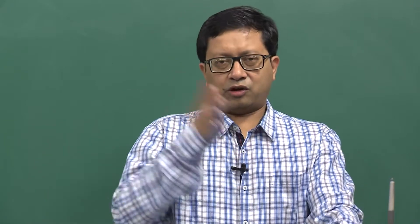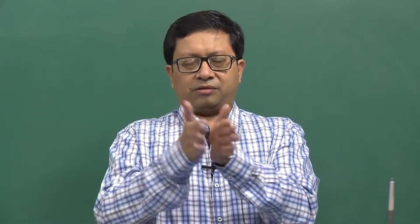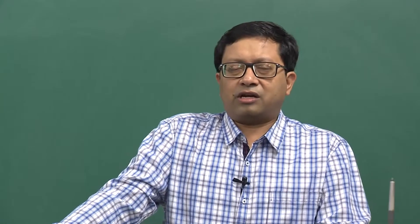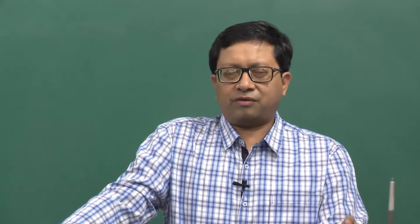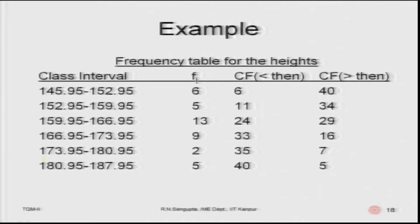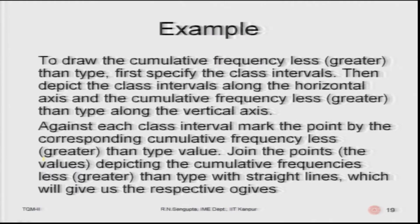Values must lie entirely within one interval and not at the boundary between two intervals. There are 6 intervals starting from 145.95 to 152.95, with the last interval being 180.95 to 187.95. Frequencies range from 6 to 5. The cumulative frequency less-than type starts from 6 to 40, and the greater-than type starts from 40 to 5.